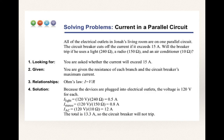Here's a practice problem using Ohm's law: all the electrical outlets in Jonah's living room are on one parallel circuit, and the circuit breaker cuts off current if it exceeds 15 amps. Using a light, a radio, and an air conditioner, you take the voltage divided by the resistance for each device to find the current drawn. Adding them all up gives 13.3 amps, so no — the circuit breaker will not trip.